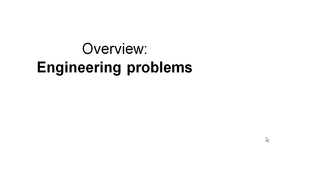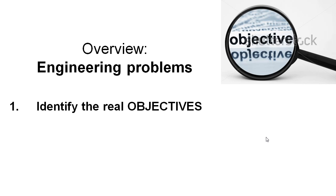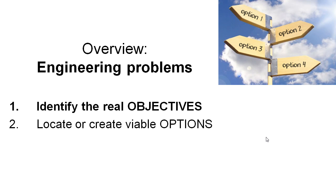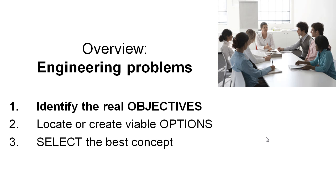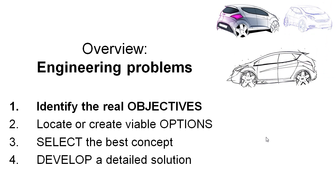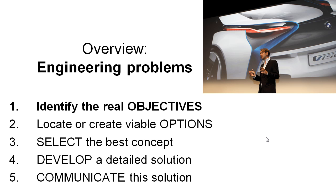I'd like to start by introducing you to a very general overview of engineering problems — an overview we're going to come back to many times throughout this subject. The first step in any engineering problem is to carefully identify what the real objectives are, to make sure we're proceeding in the right direction. The next step is to come up with a range of viable options that might solve the problem. From those options we select the best concept using proper engineering metrics, then develop a detailed solution involving calculations and engineering drawings, and finally communicate that solution via presentation, a report, or engineering drawings passed on to those manufacturing or assembling it.